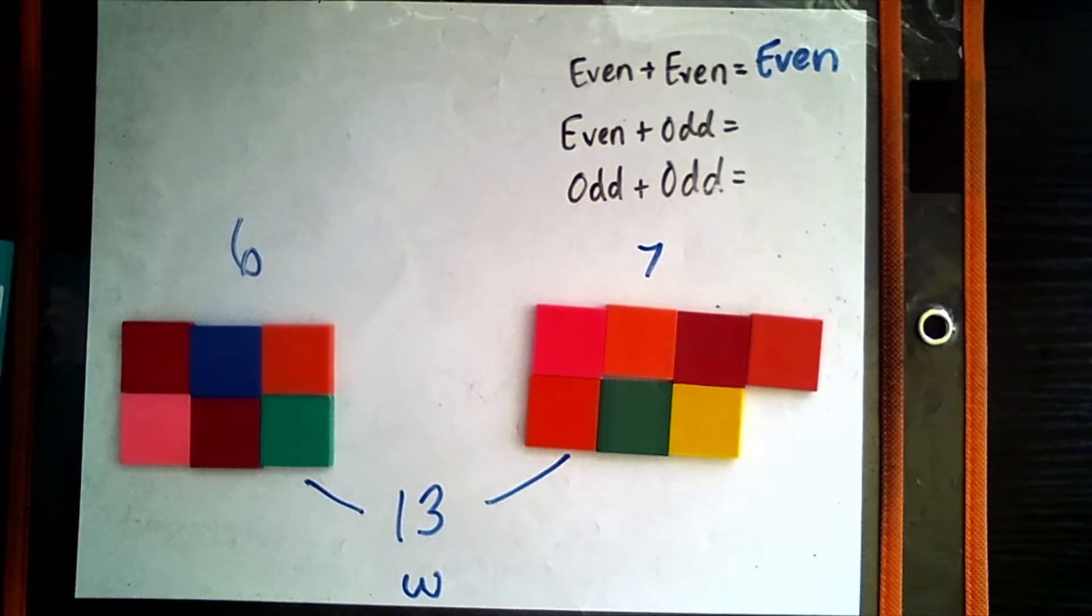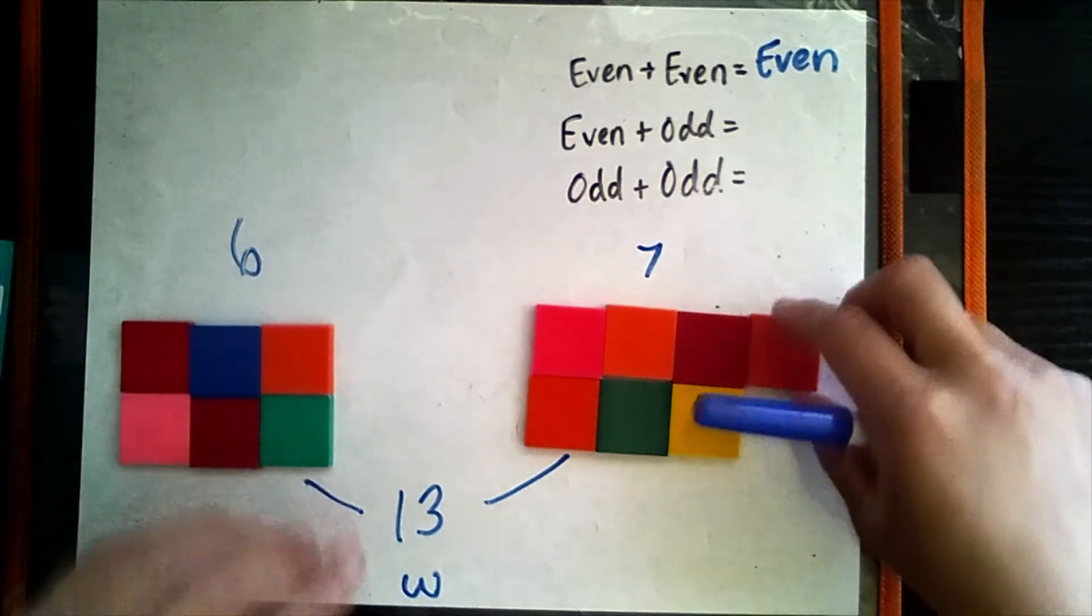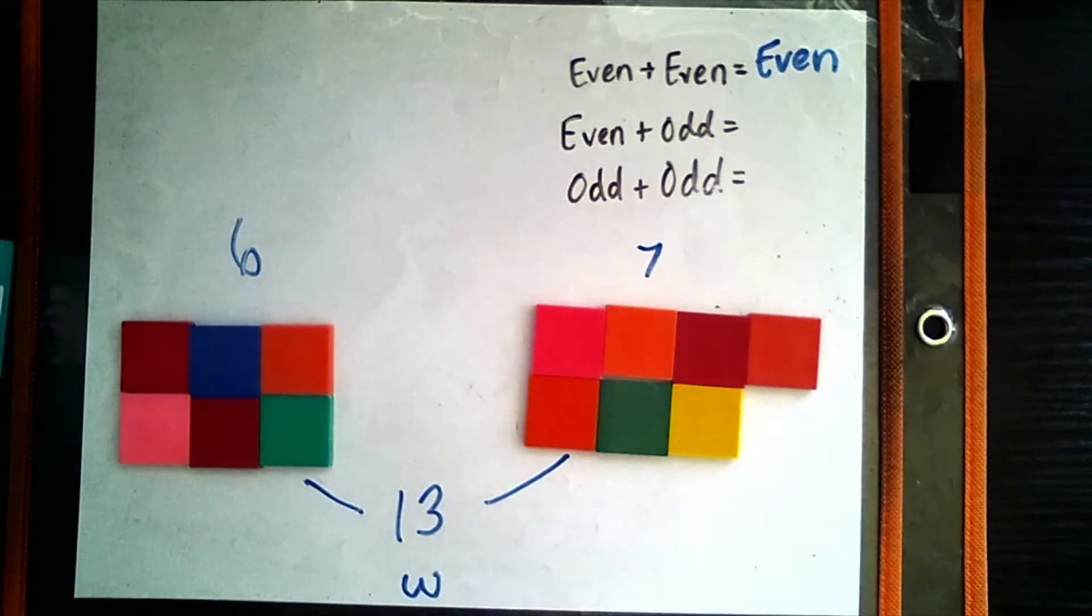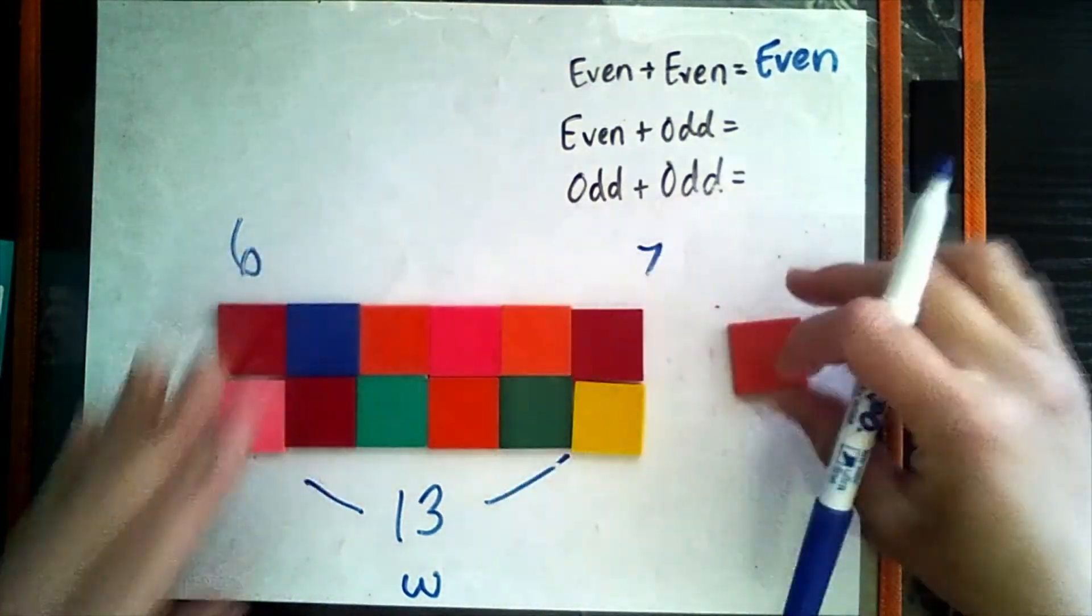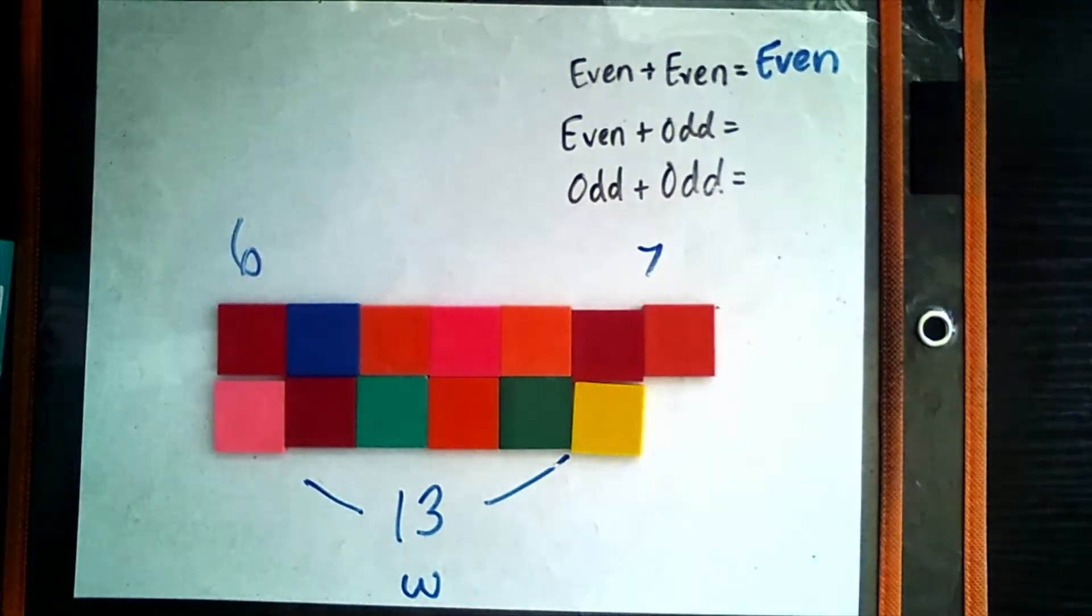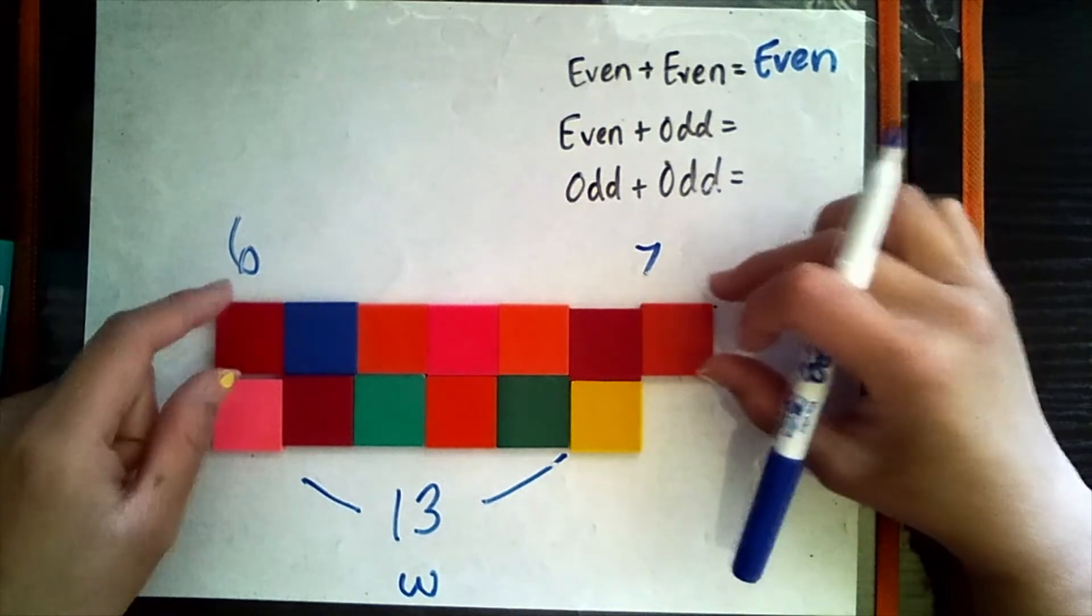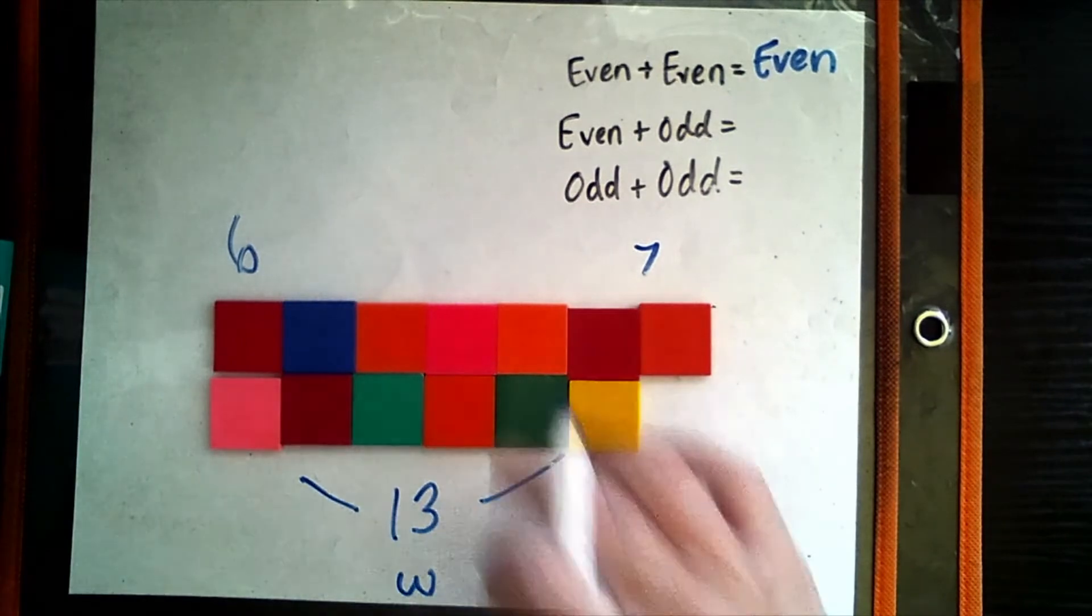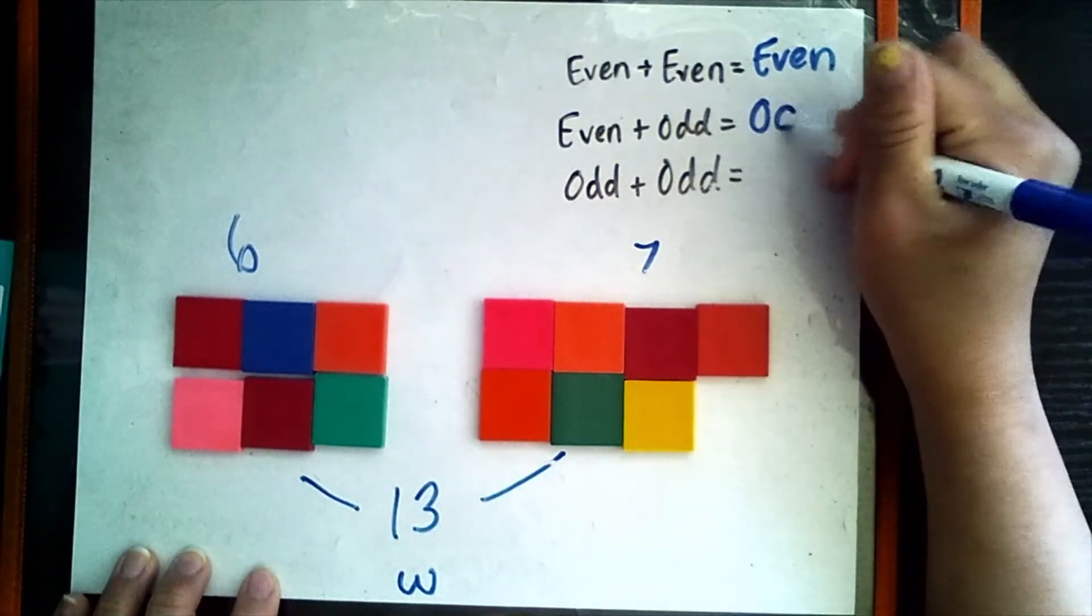Is 13 even or odd? Wonderful. It's odd. And how do we know? We know because there is one extra left over. And if we were to make two equal groups, it's just not possible. One group will always have more than the other group. And if we push together like we did the last time, again, there's one odd square out without a partner. And in the first group, there is seven. And in the second group, there's only six. So 13 is odd. And thus, we have figured out that when you combine an even number with an odd number, you get an odd number.